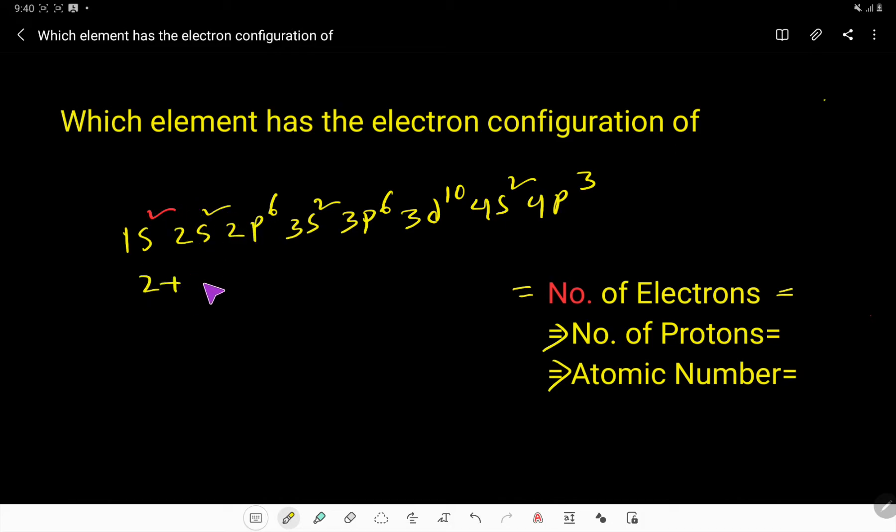So here 2, here 2, here 6, here 2, then 6, then here 10, then here 2, then here 3. If you add 2 plus 2, that's 4, plus 2 is 6, 6 plus 2 is 8, then here 6, so 12, then here we have 10, and here we have 3.